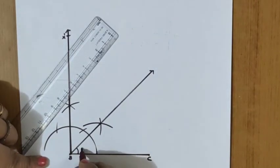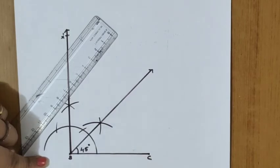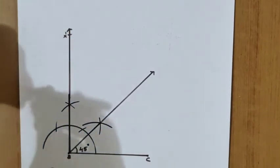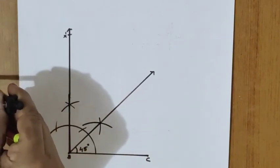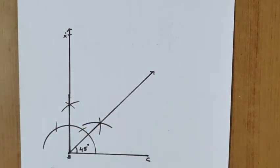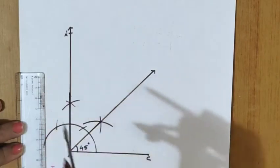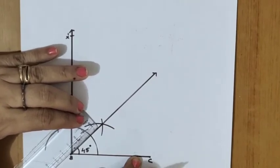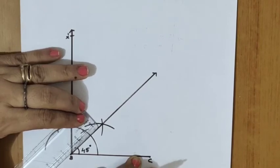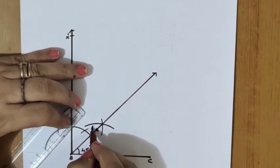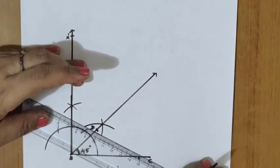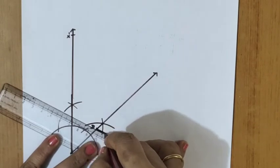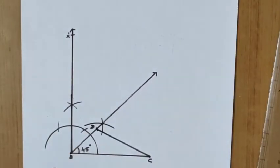Angle CBX is 45 degree. Next, from BX cut off length BD equal to 3.5 centimeter — this is the difference. Take the measurement of 3.5 in the compass and draw the arc on BX, or mark 3.5 centimeter on BX using a scale. That point is D. Next step: join CD.